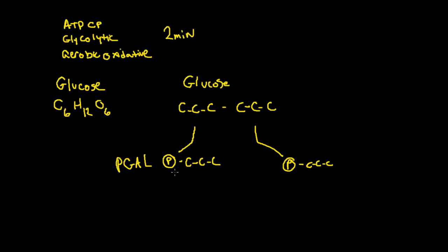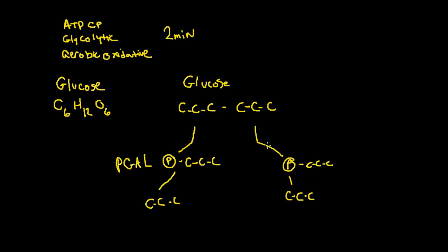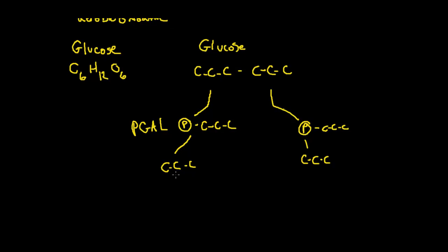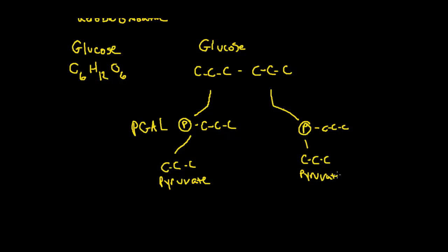And we want to continue to break this down into pyruvate. Now this is a simplified version of glycolysis. There are a bunch of other intermediate steps in there that I'm leaving out. But I want you to get the overall big picture of what's going on. So this is our pyruvate. This is a U, not a V. So this one's also a pyruvate. Okay, so there's glycolysis.